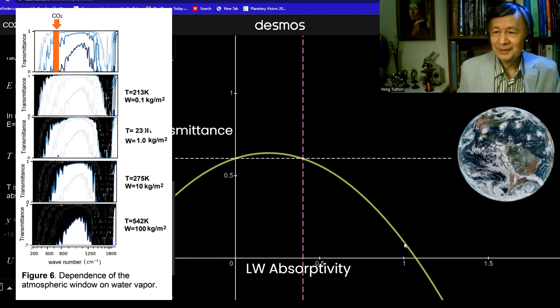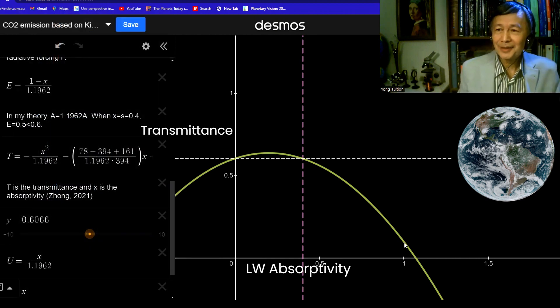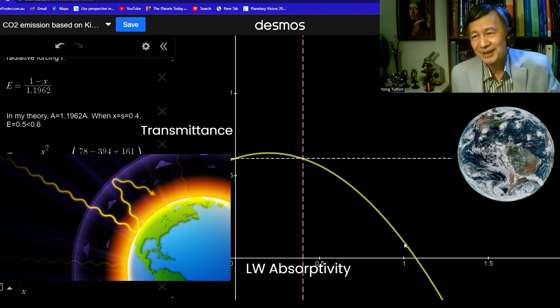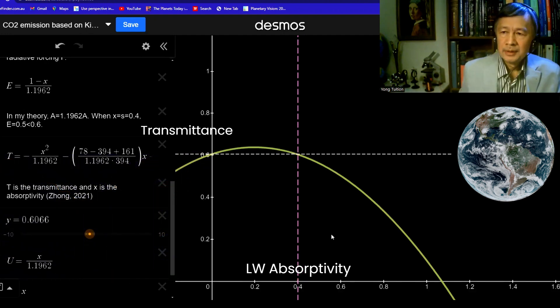So unlike the blanket effect, the Earth has no way to send off its surface radiation through the atmosphere, which is not true, of course, according to my theoretical studies.